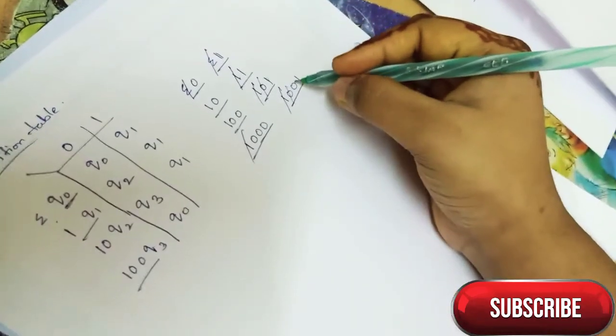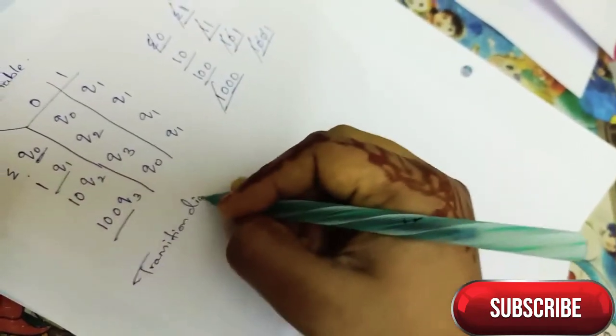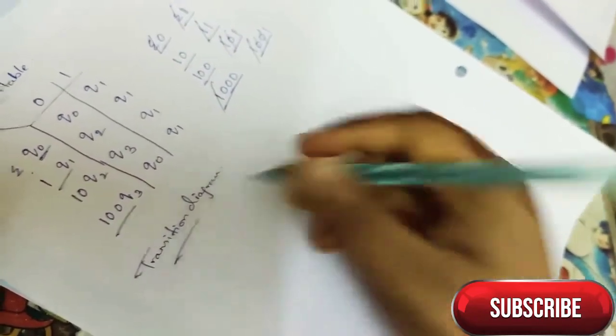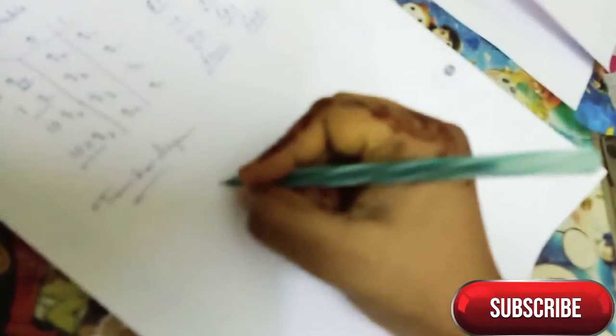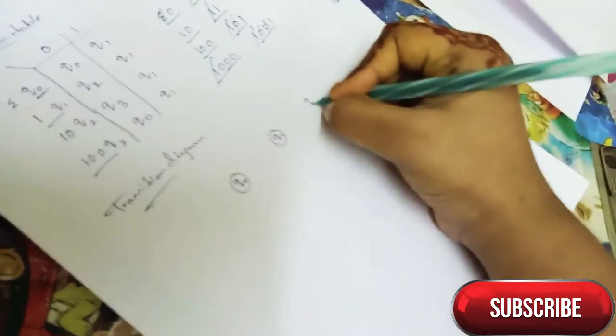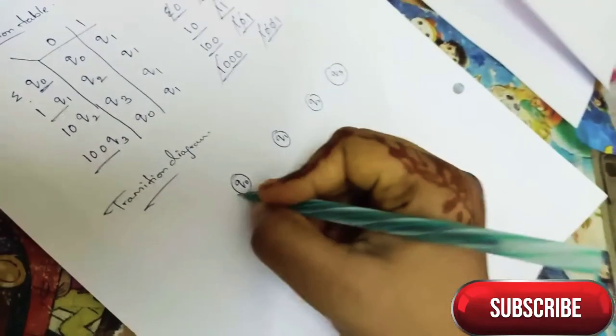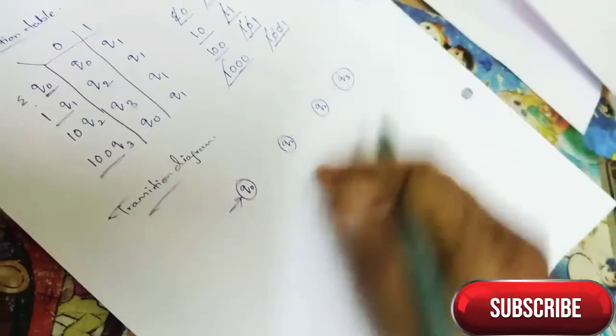Now for the transition diagram, we have states Q0, Q1, Q2, and Q3, where Q0 is initial state. First we write the arrow like this, then Q0 to Q1.